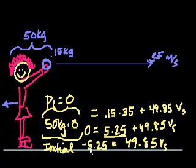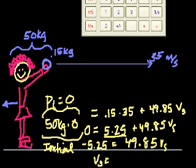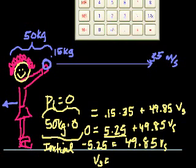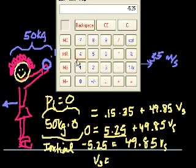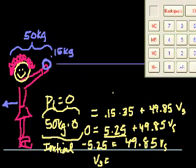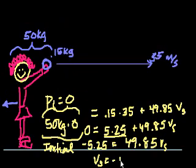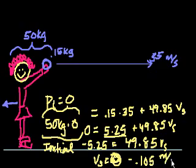And to figure out the velocity, we just divide her momentum by her mass. And so divide both sides by 49.85. And you get the velocity of the skater. So let's make this a negative number. Divided by 49.85 equals minus 0.105. So minus 0.105 meters per second.